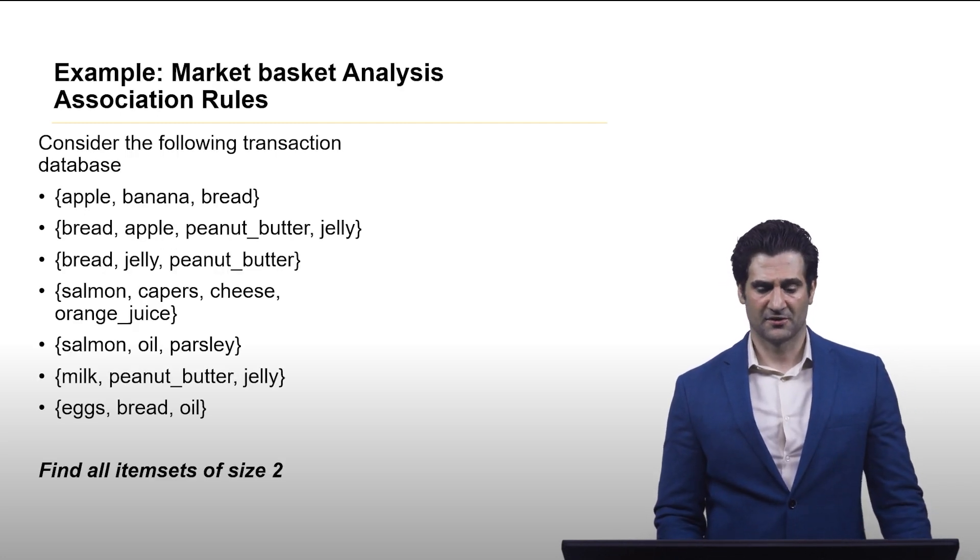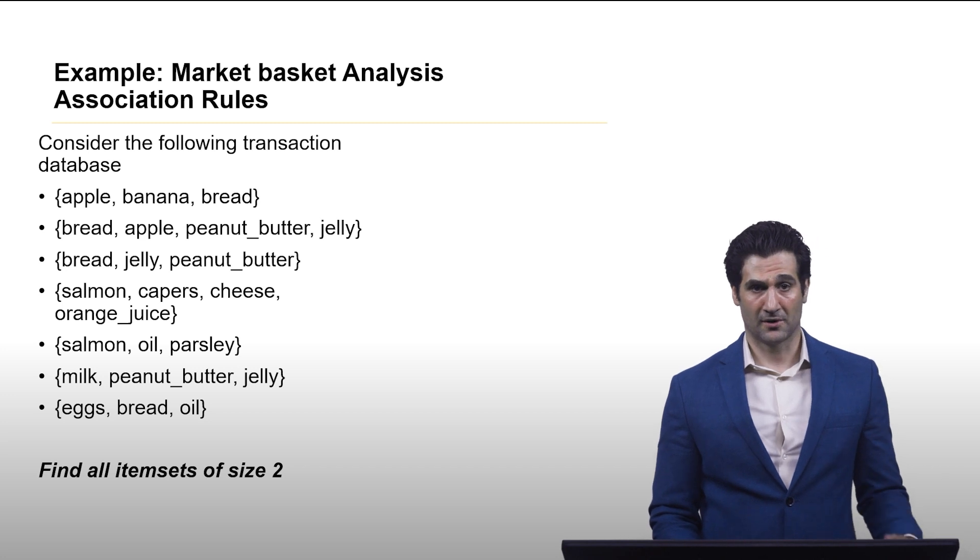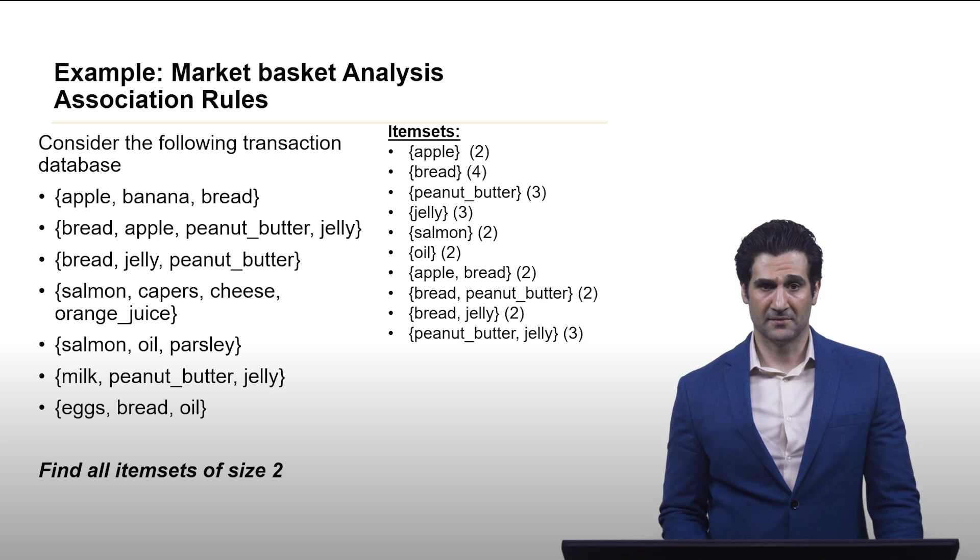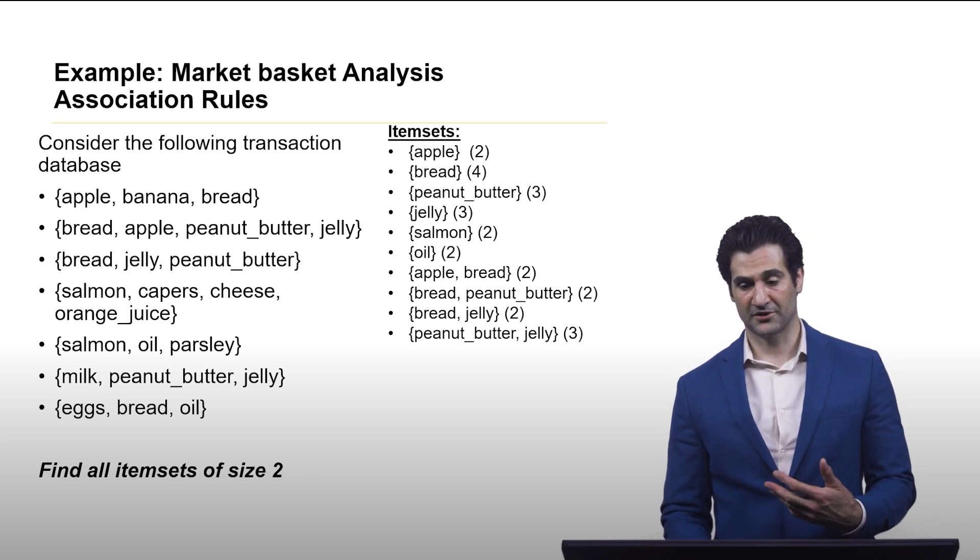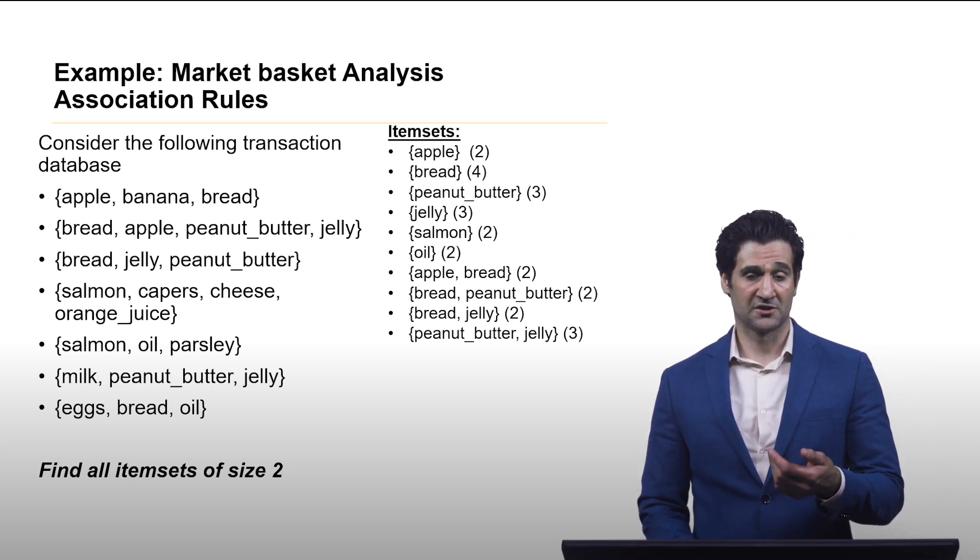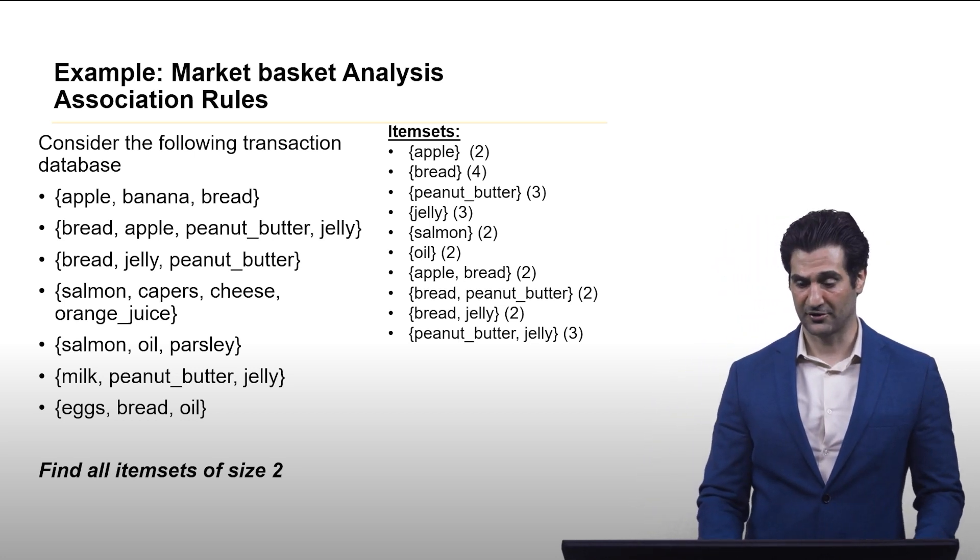So let's consider our running example, our market basket analysis. So these were all the item sets that meet a minimum support of 2. And I put in parentheses here what the support actually is. So we now know if it's more than just being greater than 2, greater than or equal to 2.